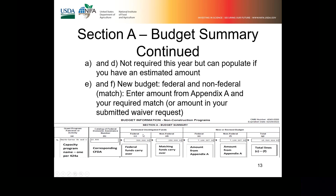The next field is the Estimated Unobligated Funds — the Federal Funds Carryover and the Matching Funds Carryover. This is not required this year, but if you have that information you can populate it. The required part is the Federal and Non-Federal Funding, which comes from Appendix A — usually at the back of your RFA. Make sure you're populating the Federal amount from Appendix A, and if you have a matching requirement, the matching amount from Appendix A as well. The total of all four of these will go in field G — I believe it automatically totals for you.